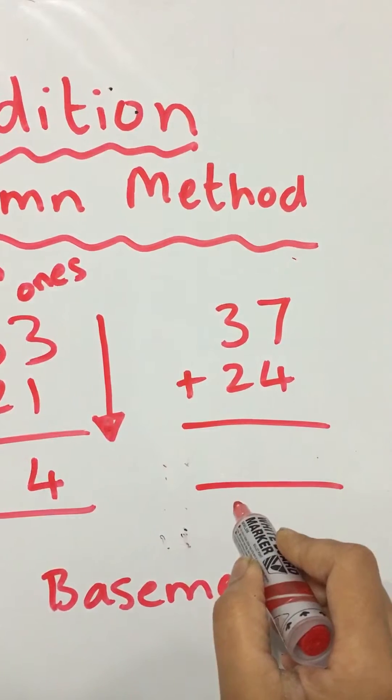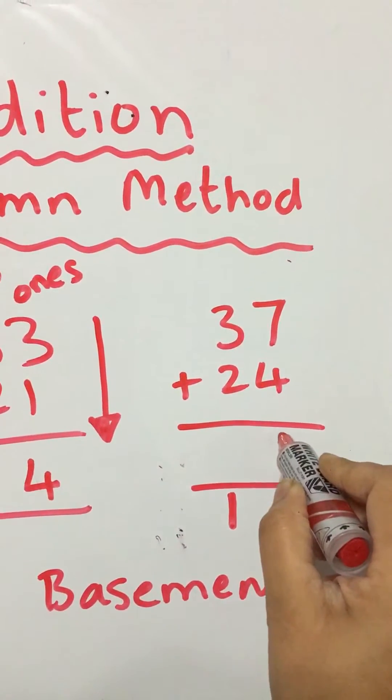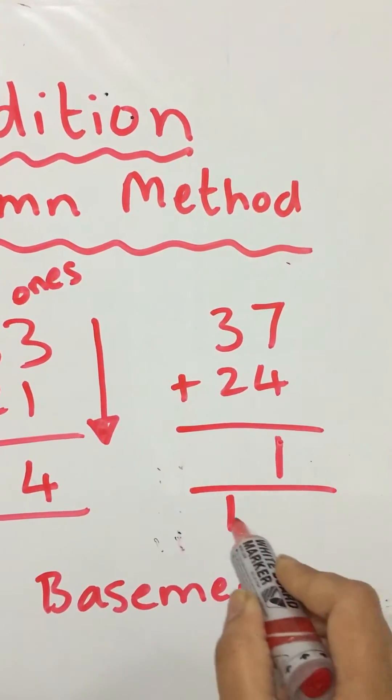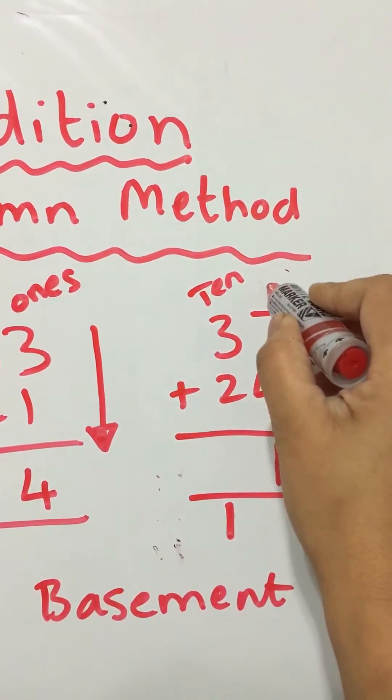7 plus 4 is 11. So we put the 1 in the basement and the 1 here. So the 1 is in the tens and the 1 digit for the ones.